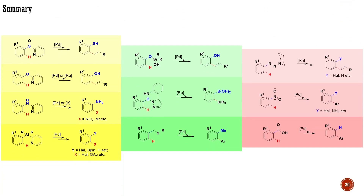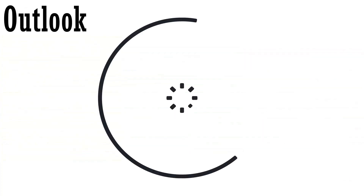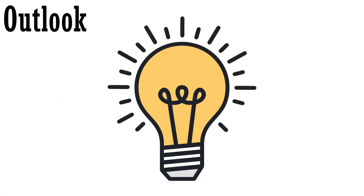To sum up, in this lecture we examined the main removable directing groups used in selective CH transformations. We explored the principles underlying the development of removable and modifiable directing groups, and specifically focused on CH transformations guided by the pyridine directing group attached to the main molecule via a carbon-silicon bond, nitro-group-directed CH arylations, and hydroxylamine-based directing groups used in aliphatic systems. In the following lecture, we will delve into two additional families of directing groups demonstrating added value. Thank you for your attention.